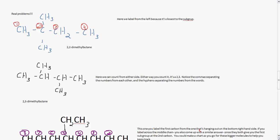So moving on, here's some real problems. Now in 2,2-dimethylbutane we already looked at this and we label from the left because it's the closest subgroup. Moving on to 2,3-dimethylbutane. Here you can count from either side. And either way you count it, it's going to be 2-3. And notice the comma separating the numbers from each other and the hyphen separating the numbers from the word. So it's 2,3-dimethylbutane. And this sort of has a plane of symmetry. You can see that it doesn't matter if you count from either side, you'll have a 2-3.